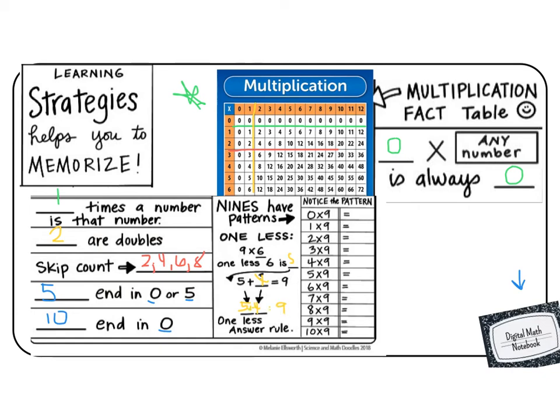Let's go ahead and fill in our nines pattern. So we have 0 times 9—well, anything times zero is zero. 1 times 9—anything times one is that number: 9. 2 times 9, we double it: 18. 3 times 9, one less than 3 is 2, and 2 plus 7 is 9: 27. 4 times 9 is 36. 5 times 9 is 45.